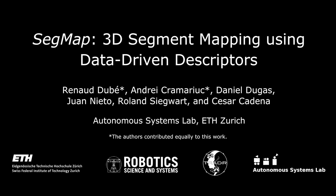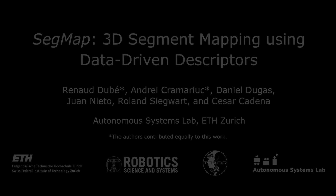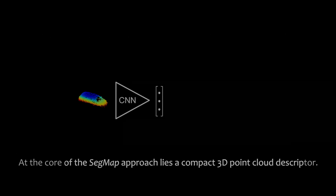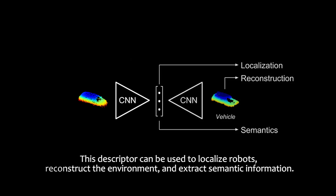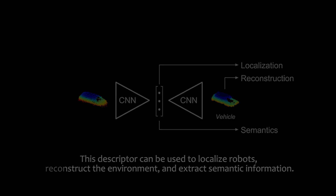We present SegMap, a 3D segment mapping representation based on data-driven descriptors. At the core of the SegMap approach lies a compact 3D point cloud descriptor. This descriptor can be used to localize robots, reconstruct the environment, and extract semantic information.